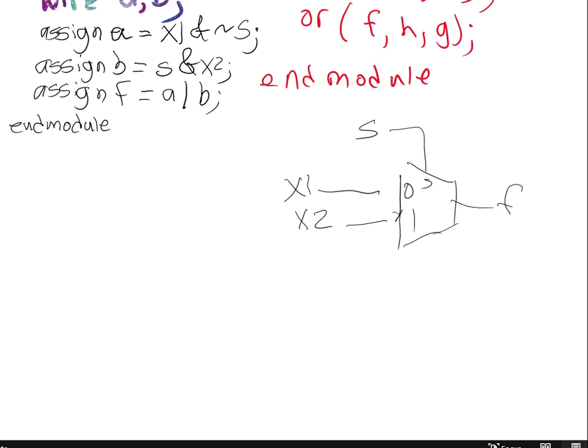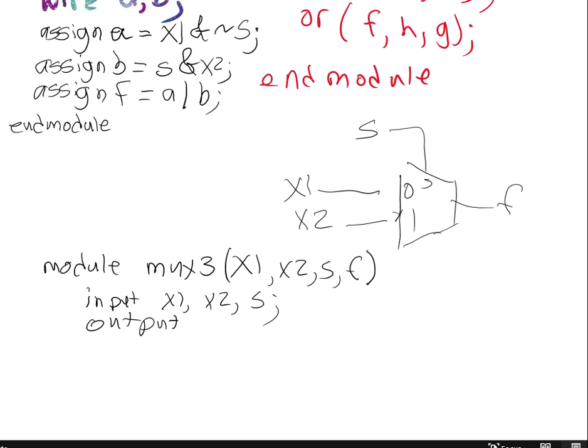So now I'm going to have module mux 3. I still have my same inputs, X1, X2, S, and my same output, F. I can do this in one line. So my input is X1, X2, S. My output is F.